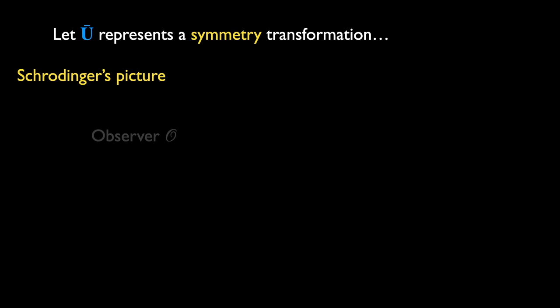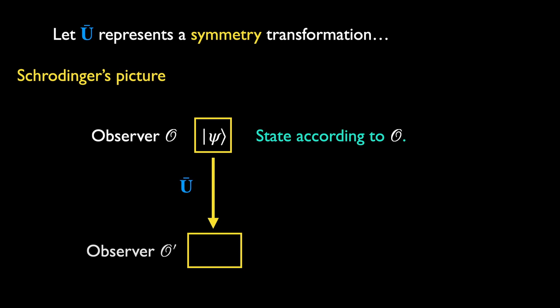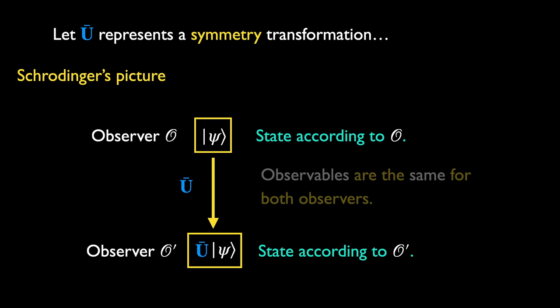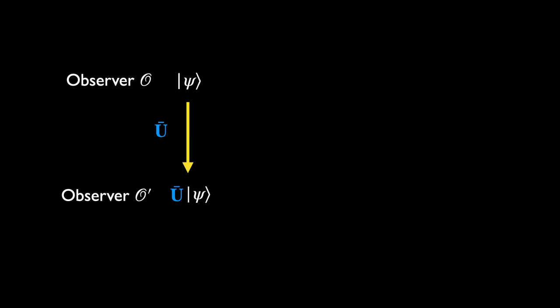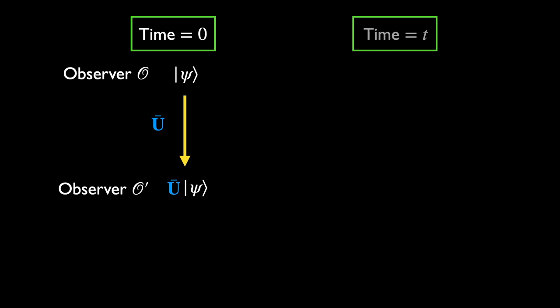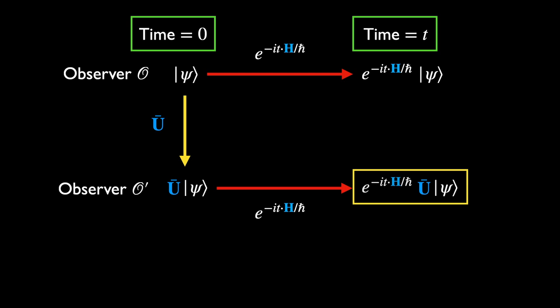We now proceed to prove that an anti-unitary symmetry must lead to time reversal. Let U-bar be an anti-unitary operator which represents a symmetry transformation. It would be convenient to view this transformation in the Schrödinger picture, such that U-bar converts any state psi in the reference frame of observer O to a state U-bar psi in the frame of O-prime, whereas physical observables remain unchanged. As the system evolves from time equals 0 to time t, the state according to observer O turns from psi to the time-evolved psi generated by the Hamiltonian as prescribed by quantum mechanics.